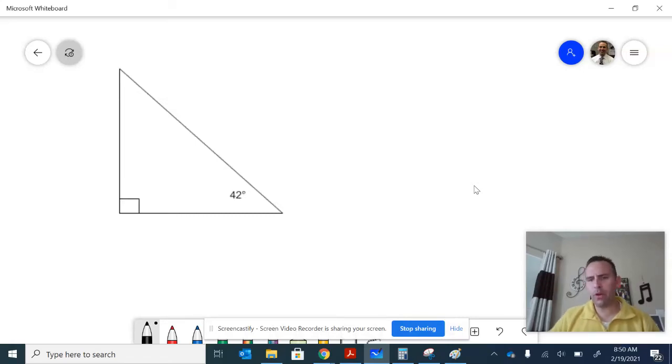Continuing with the video from the previous page, looking at this right triangle with one angle measure of 42 degrees, we would know by using the angle sum that the other angle should be 48 degrees because 48 plus 42 would be 90, plus the other 90 is 180.